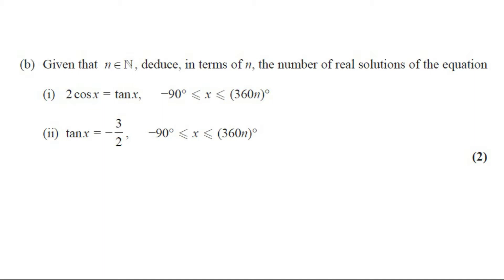Part B. Given that n belongs to the set of all natural numbers, deduce in terms of n the number of real solutions of the equation. Part 1: 2cos(x) equals tan(x), with the limit from negative 90 degrees to 360n degrees. Part 2: tan(x) equals negative 3 over 2, with the limit from minus 90 degrees to 360n degrees. This question carries 2 marks.